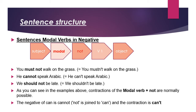'He cannot speak Arabic.' We can also write this as 'can't', 'shouldn't', or 'wouldn't'. For example, 'We should not be late' becomes 'We shouldn't be late.' As you can see in the examples, contractions of the modal verb plus 'not' are normally possible. The negative of 'can' is 'cannot' and the contraction is 'can't'.